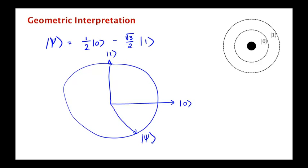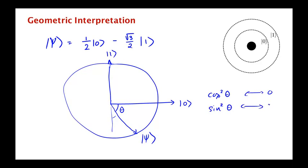There's also an interpretation of this in terms of measurement. What we're saying is that the state collapses to the zero state with probability cosine²θ, and it collapses to the one state with probability cosine² of the angle it makes with the one state, which ends up being sine²θ. So cosine²θ is the probability of zero, and sine²θ is the probability of one.